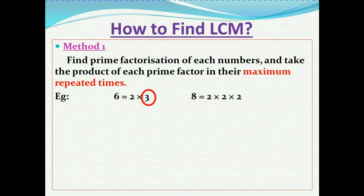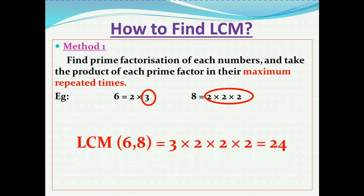In the prime factorization of 6, the number 2 is used only one time, but in the case of 8, we have used the number 2 three times. So the maximum repetition of 2 is three times — that is in the prime factorization of 8. The number 3 is used a maximum of only one time. Taking the product: 3¹ × 2³ = 3 × 2 × 2 × 2 = 24. So the LCM of 6 and 8 is 24.